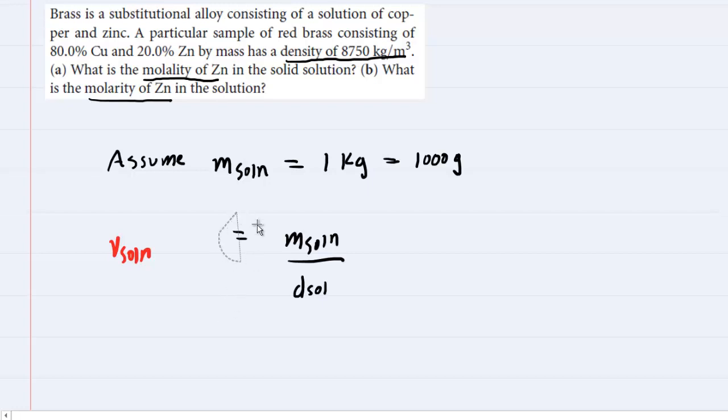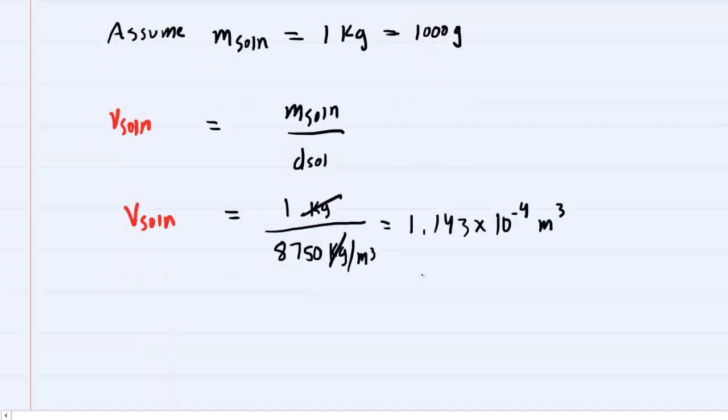We'll plug in the values of mass and density. When we divide 1,000 grams by 8750 kg/m³, the kilograms cancel and we're left with approximately 1.143 times 10 to the negative 4 meters cubed. That's the volume of our solution.